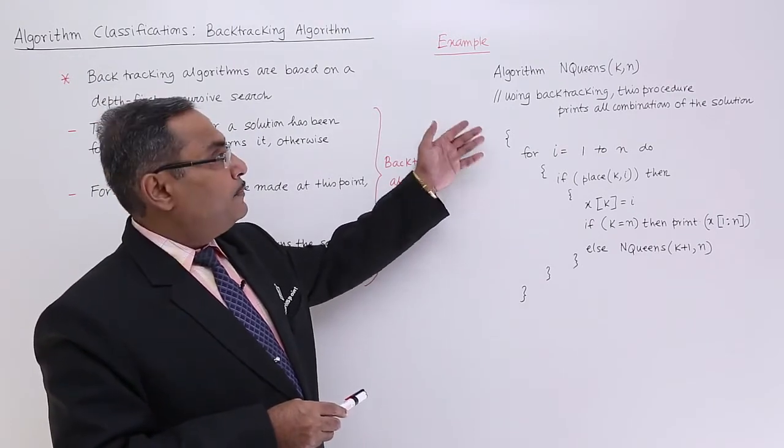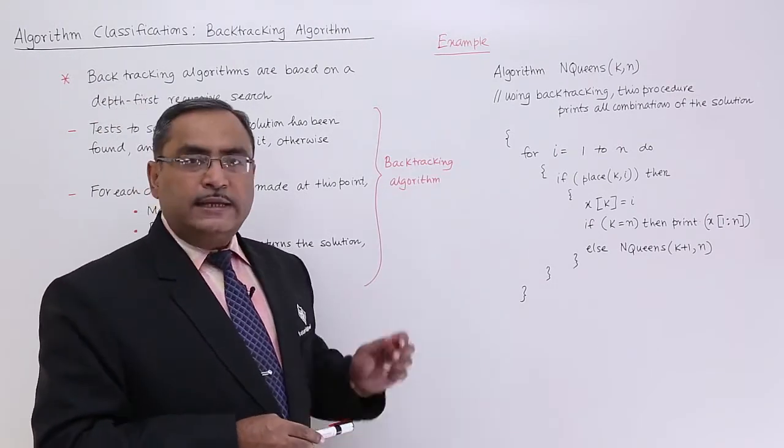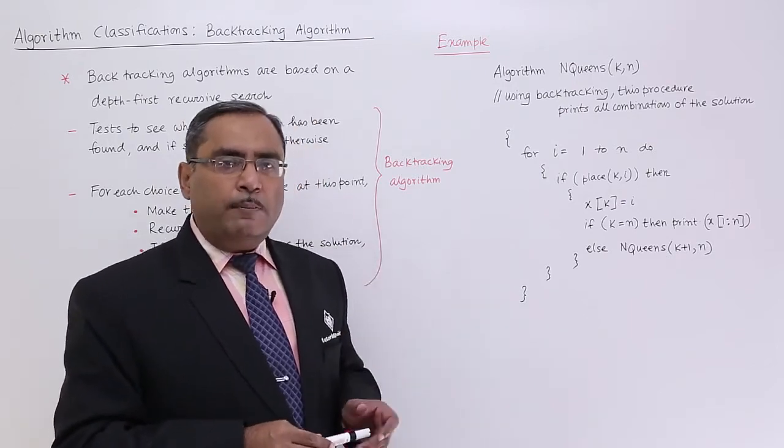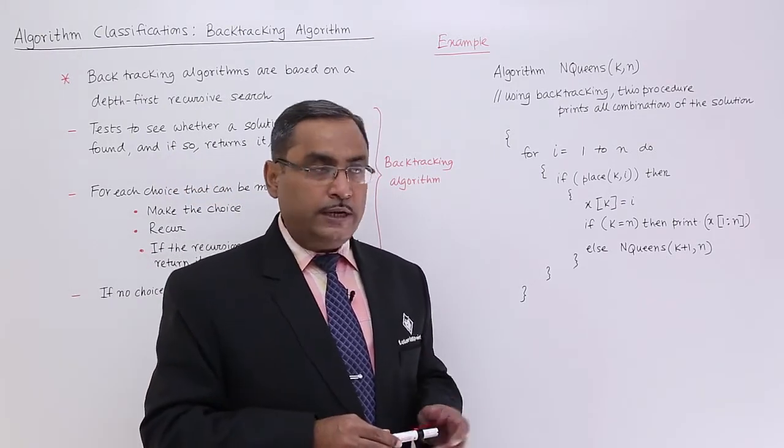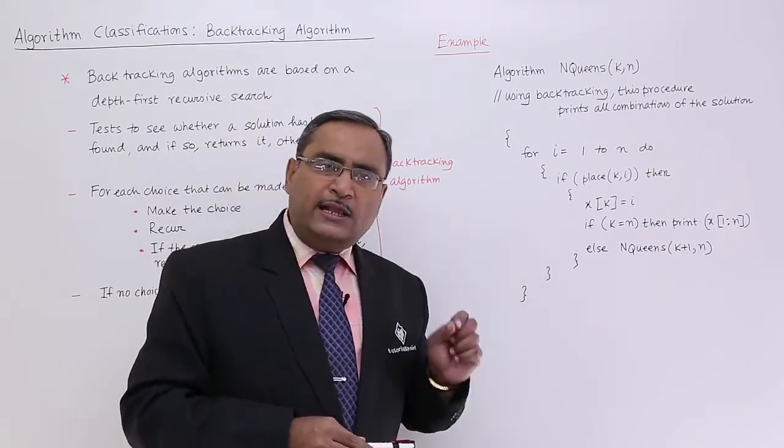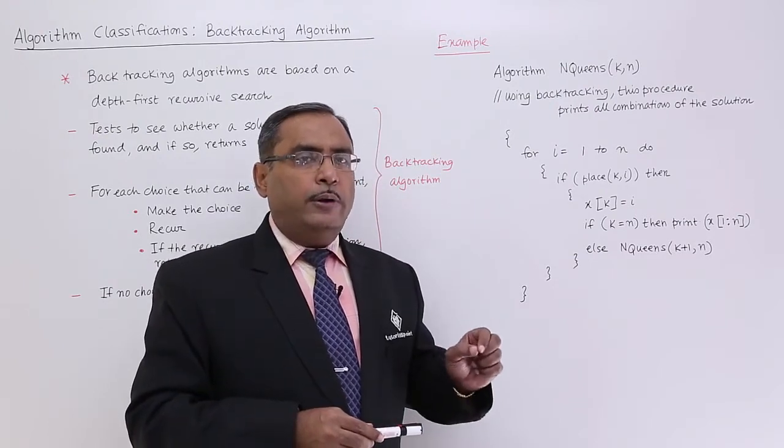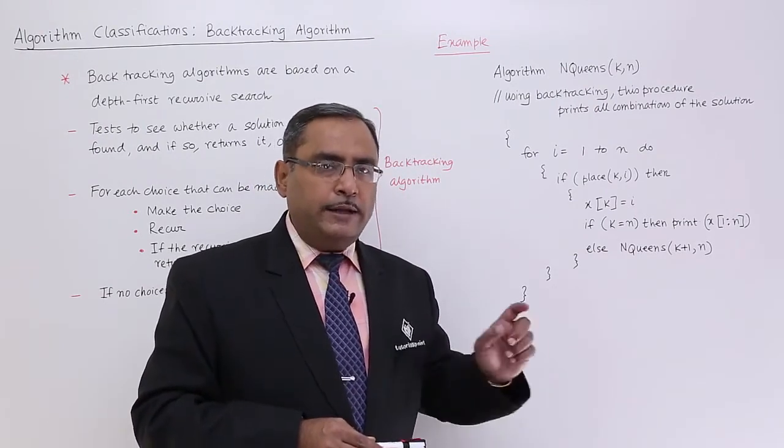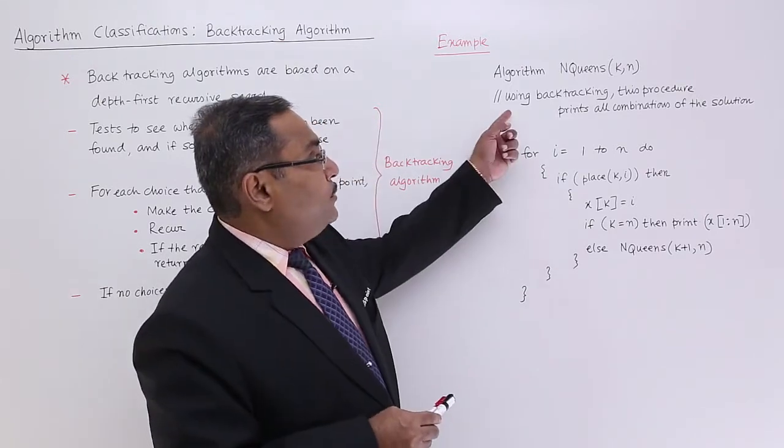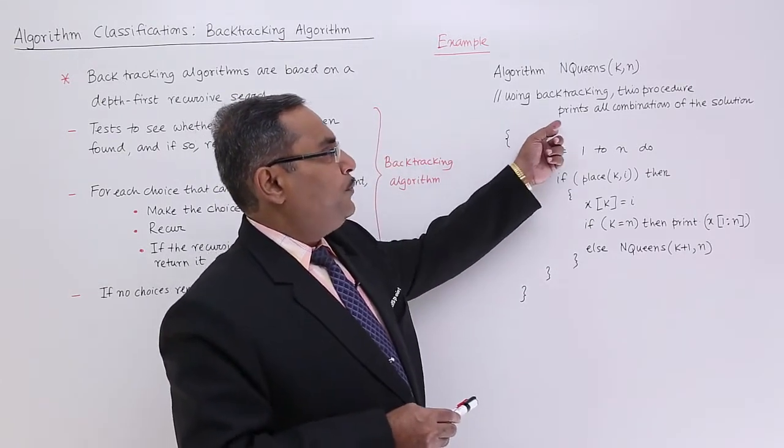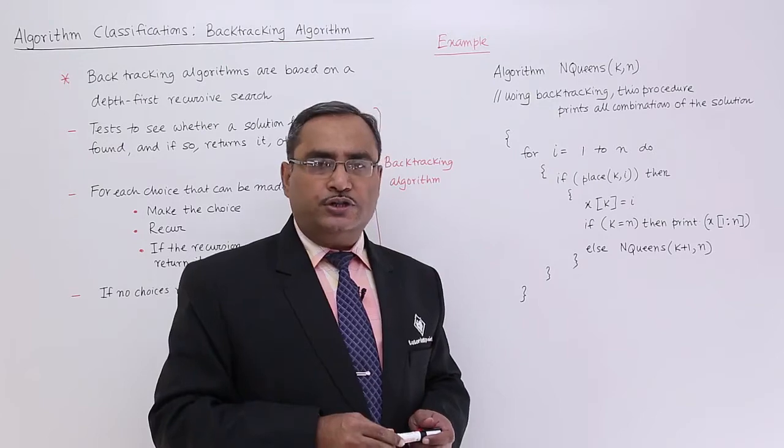Algorithm N-Queens of k, n. N is the number of Queens, maximum number of Queens. It is there, and k is the kth Queen which I want to place in the matrix maintaining all the constraints. Using backtracking, this procedure prints all the combinations of the solution.